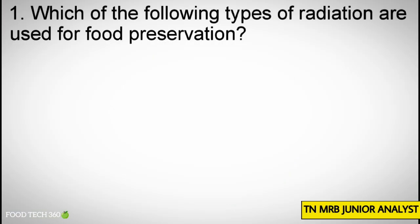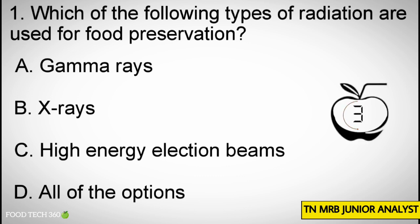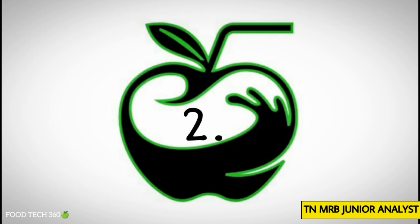Question number 1: Which of the following types of radiation are used for food preservation? Options: A. Gamma rays, B. X-rays, C. High Energy Electron Beams, D. All of the options. Correct answer: D. All of the options.